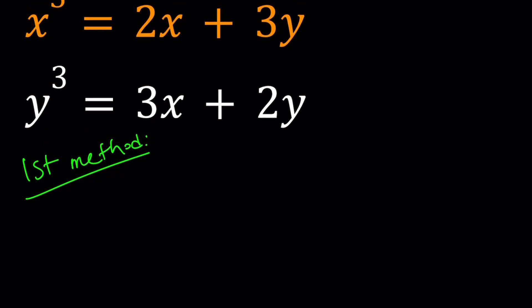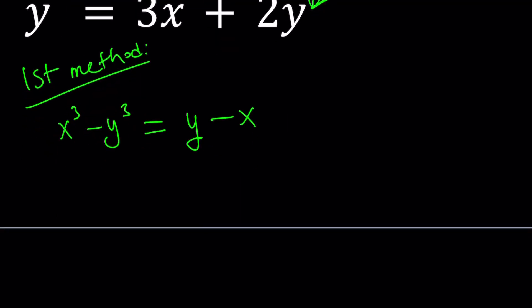For my first method, I'm going to subtract these equations. x³ minus y³. If I subtract 2x minus 3x, I get a negative, so let's subtract these two first. I get y and then minus x. Now here's what I'm going to do. I'm going to put everything on the same side.